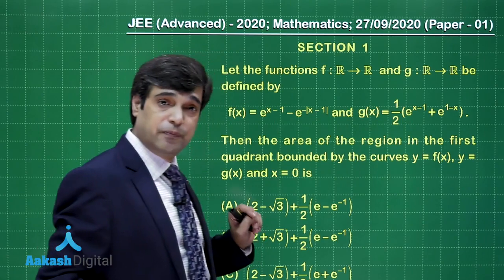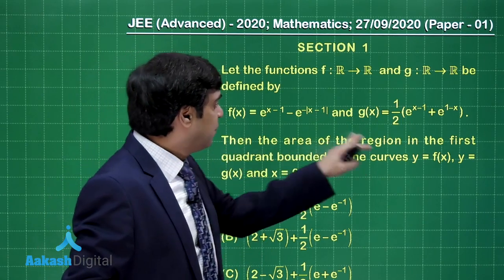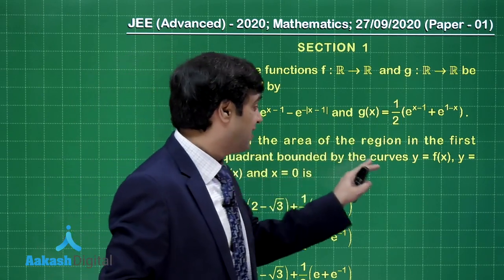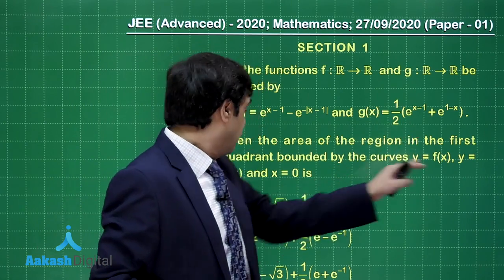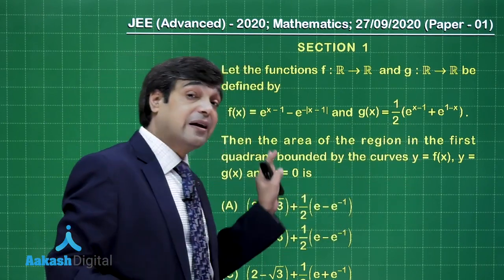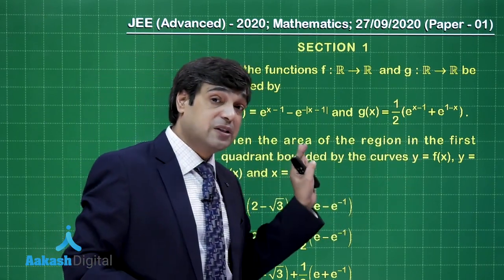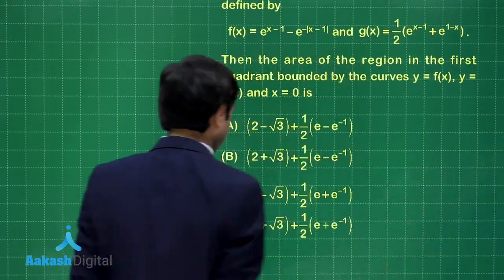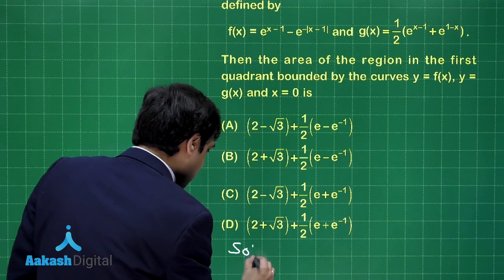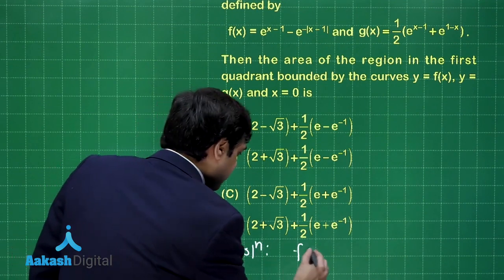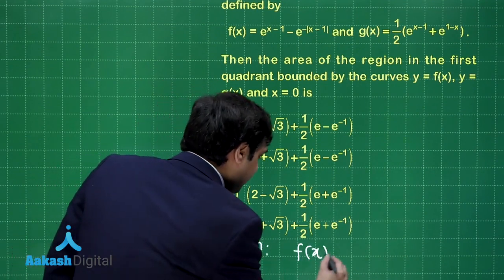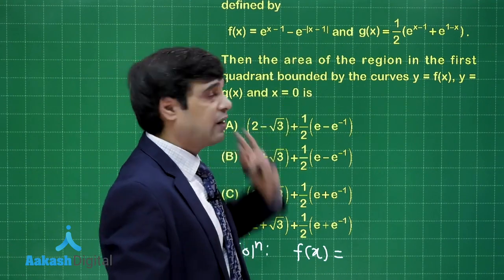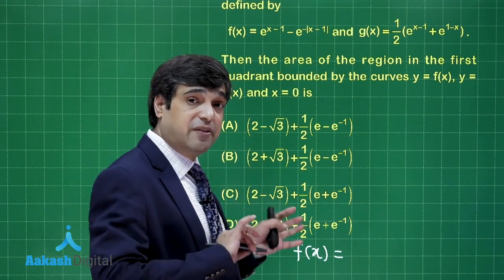Moving on to Question 3: Let the functions f and g be defined by the given expressions. We need to find the area of the region in the first quadrant bounded by the curves y = f(x), y = g(x), and x = 0. Let's understand the functions given.